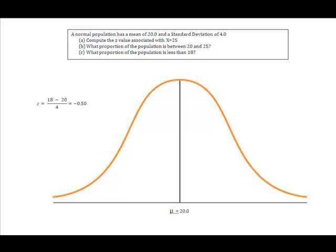Now the question asks us, what proportion of the population is less than 18? So anytime that I get this x-value, I automatically go over here, and I just convert 18, our number of interest, into a z-score, and in this case, I get a negative 0.50.